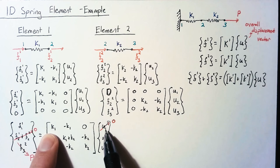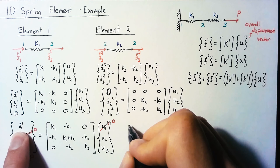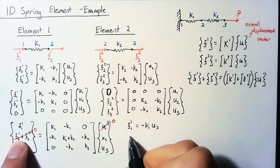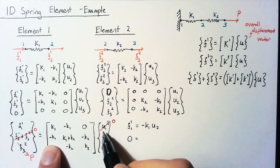For our second equation, our left-hand side is zero, and our right-hand side, the negative K1 is multiplied by U1, so that goes away. Then we're going to have this K1 plus K2 multiplied by U2 minus K2U3.